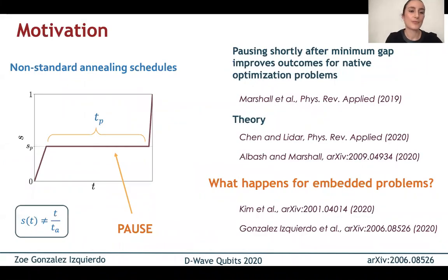So for the last few years, we've been able to have some control over annealing schedules on D-Wave. In particular, the rate at which the annealing parameter s varies over time can be changed throughout the anneal and it can be set to zero, like here. This is what we call a pause. We denote the pause location by sp and the pause duration by tp.